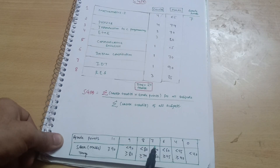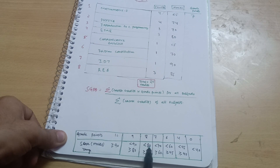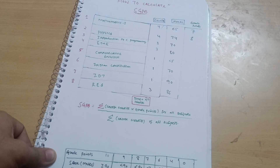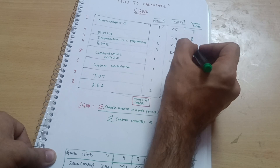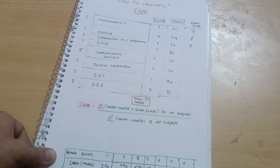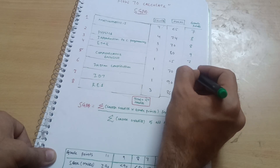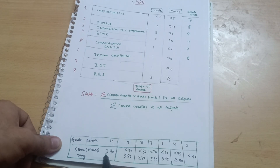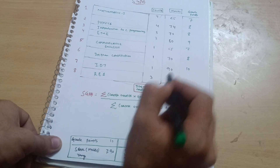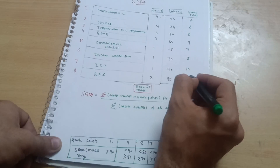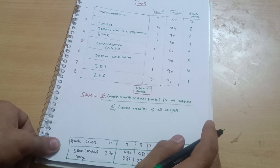For 70 marks, ≥70 means grade point is 8. For 80 marks, ≥80 means grade point is 9. For 65, grade point is 7; for 70, grade point is 8. For 90 or above, grade point is 10. For 85, it falls in ≥80 and <90, so grade point is 9. I hope you are getting it.